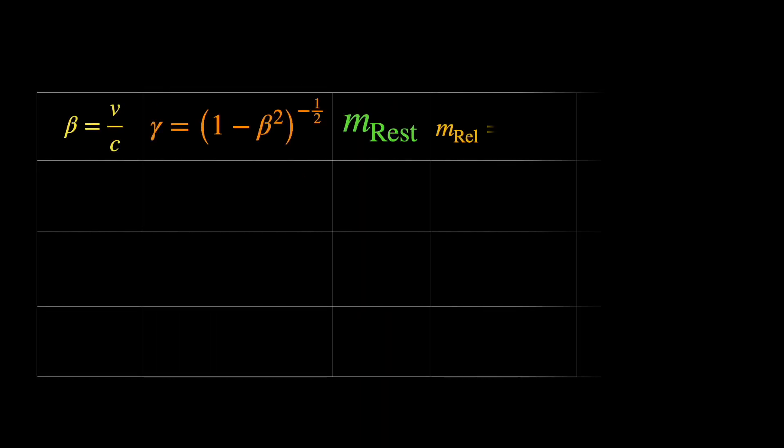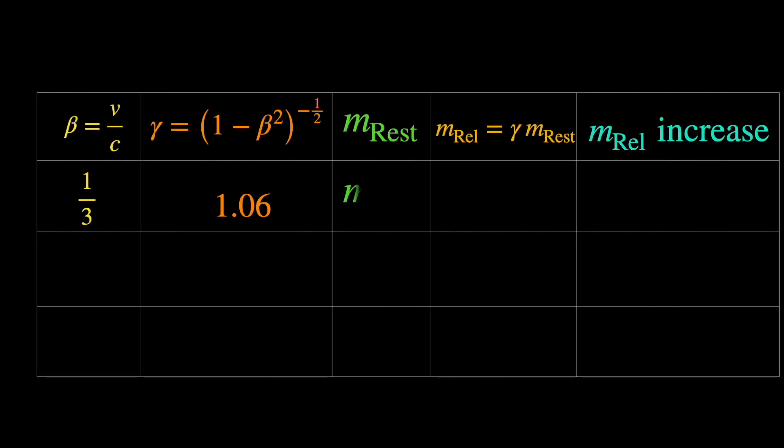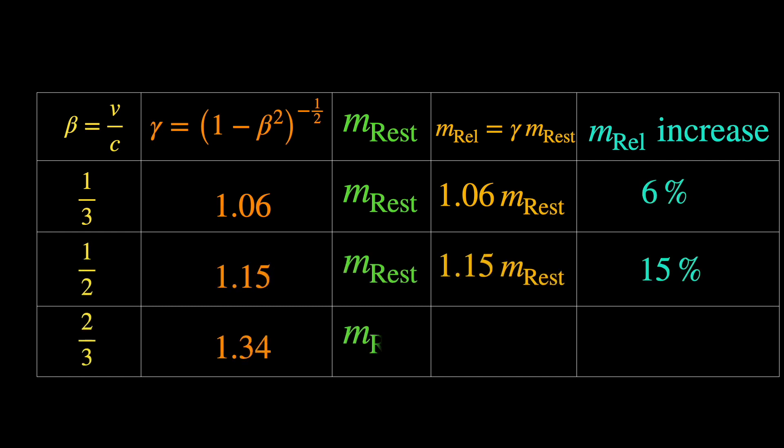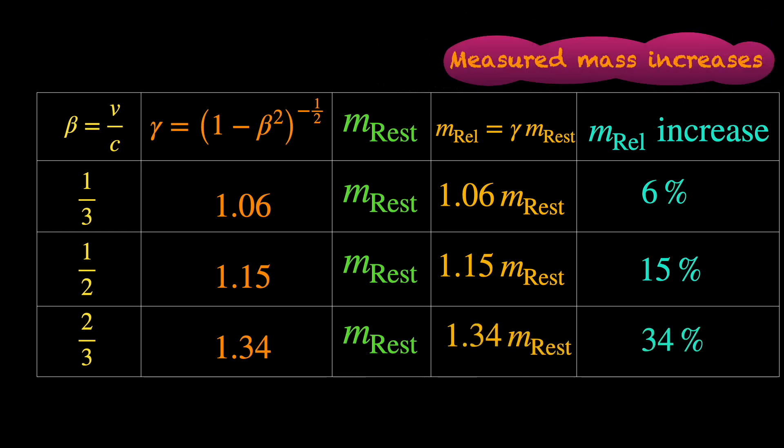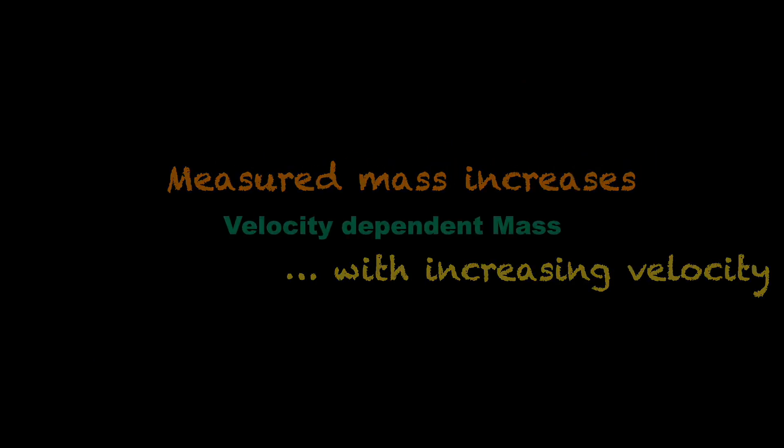If he repeats this exercise for different values of high velocity, for example, one-third or one-half or two-third the speed of light and so on, the gamma factor will shoot up and he will conclude that the measured mass of the particle is increasing with increasing velocity. And of course, the concept of a velocity-dependent mass will be the outcome of his experiment.